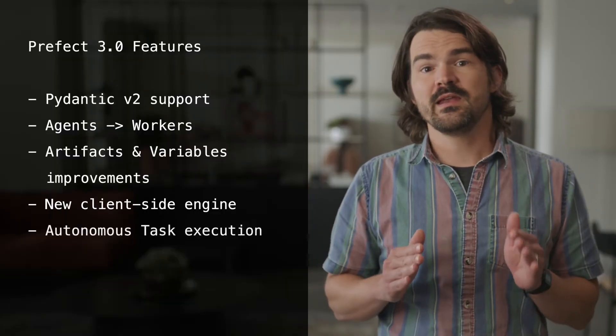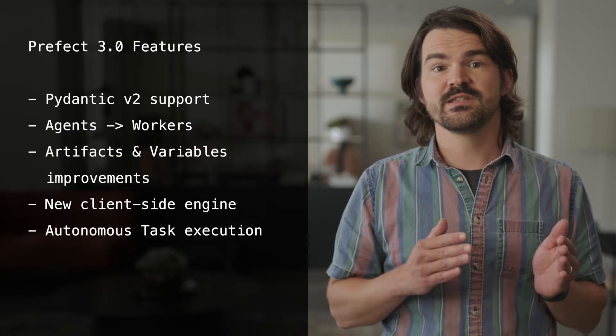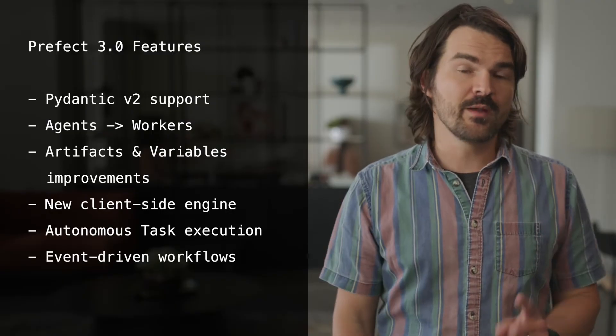Prefect 3.0 also open sources a new mechanism for expressing event-driven workflows and automating your data platform. Prefect's events backend is essentially a loose coupling layer between Prefect and external systems, allowing for easy monitoring, debugging, and automation. Specifically, you can trigger actions based on the presence or absence of certain event payloads — for example, canceling certain runs if an observable condition is not seen in some time window, triggering a workflow run when a new file lands in an S3 bucket, or receiving a notification if a work pool goes unhealthy. All of this is now available in Prefect open source.